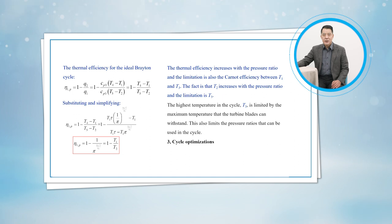Thirdly, let's talk about the cycle optimization. The optimal compression ratio is the compression ratio at which the cyclic-specific network reaches maximum.